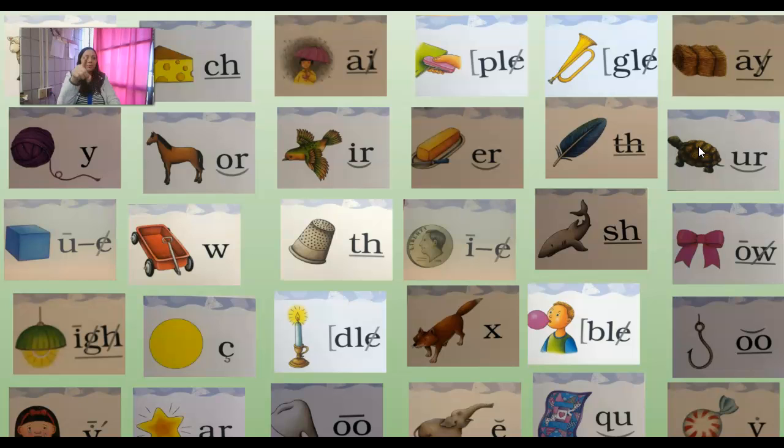Bird er combination IR, butter er combination ER, feather th digraph TH, turtle er combination UR, cube U U U consonant E, wagon wuh W, thimble digraph TH, dime I I consonant E, shark shh digraph SH, bow O digraph OW, remember that was a new one.